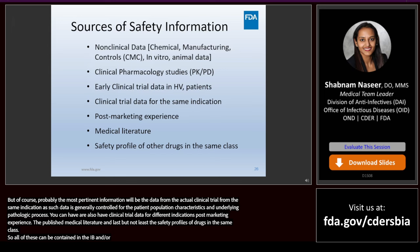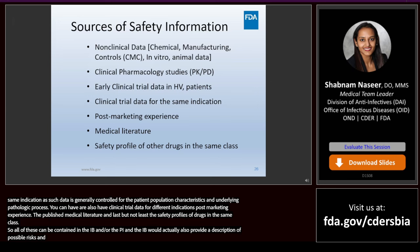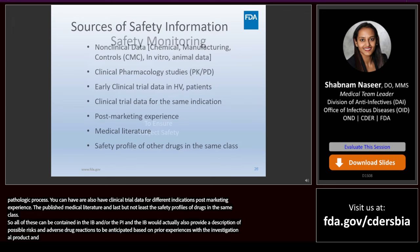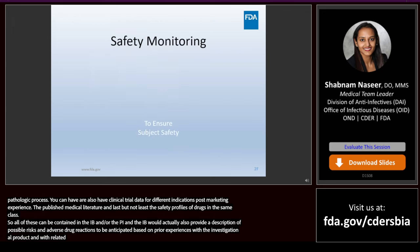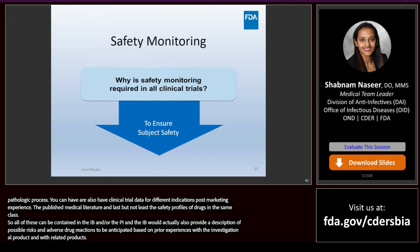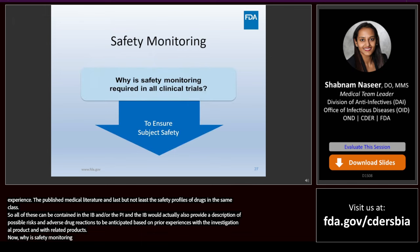The IB would also provide a description of possible risks and adverse drug reactions to be anticipated based on prior experiences with the investigational product and related products. Why is safety monitoring required in all trials? The goal is to identify, evaluate, minimize, and appropriately manage risk. This leads well into our discussion of adverse events ascertainment and monitoring.